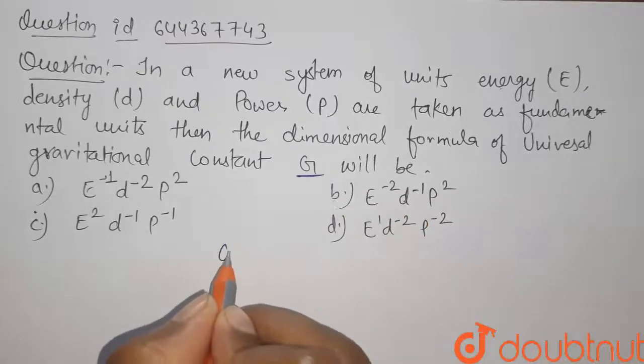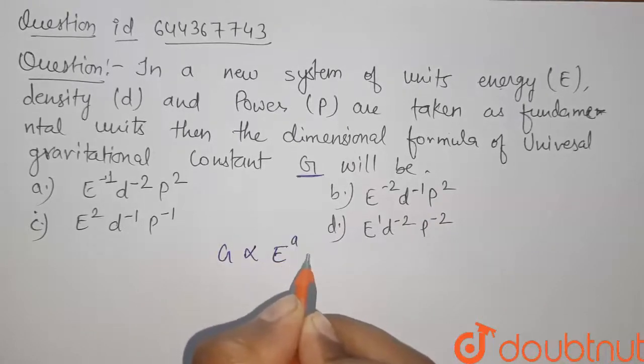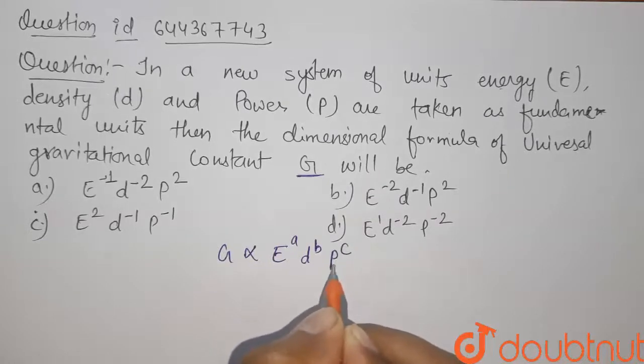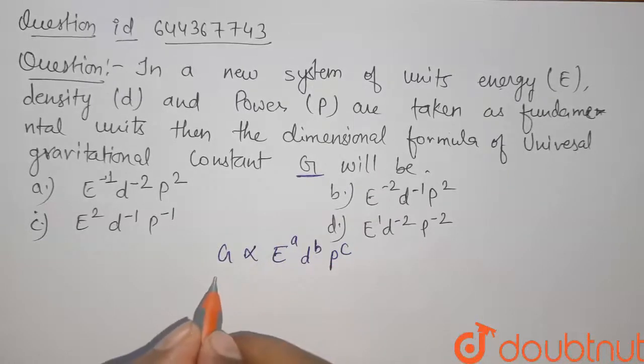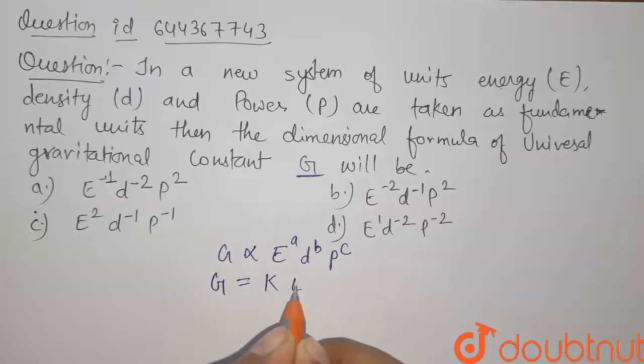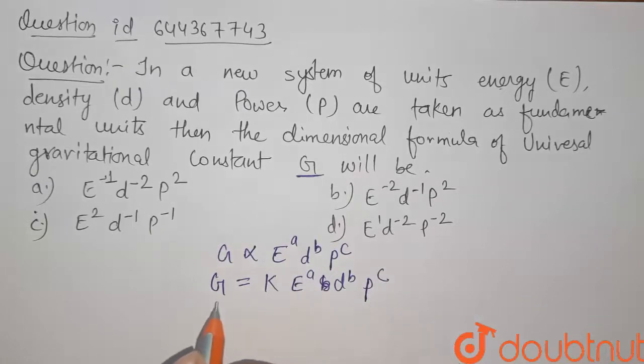So let us take G is proportional to E to the power A, D to the power B and P to the power C. Now when this proportionality sign is removed, here comes a dimensionless constant. So it is K and here it will be E to the power A, D to the power B and P to the power C. Now we will use dimensional analysis to find the values of A, B and C.